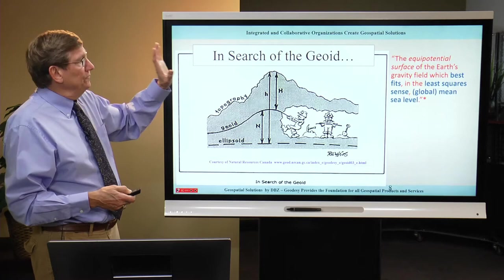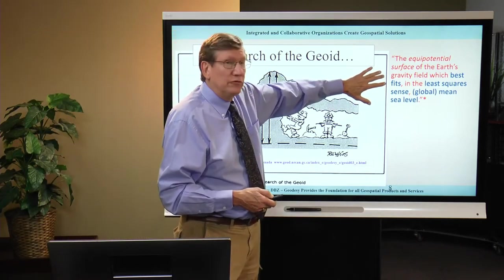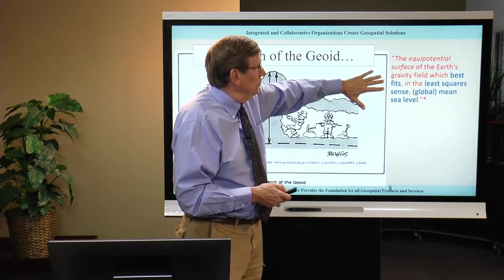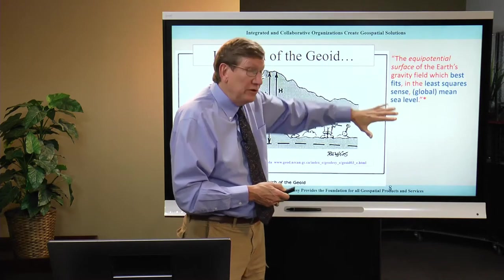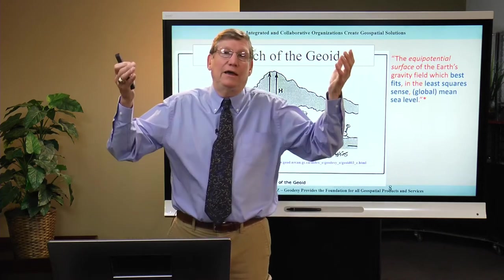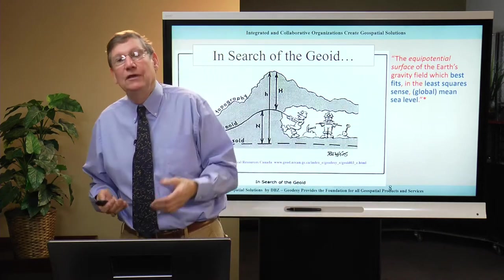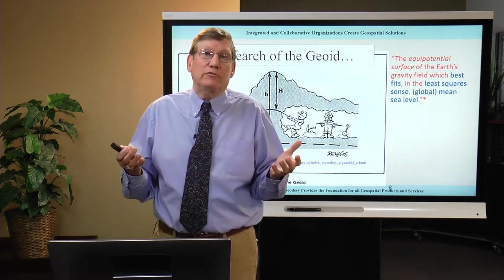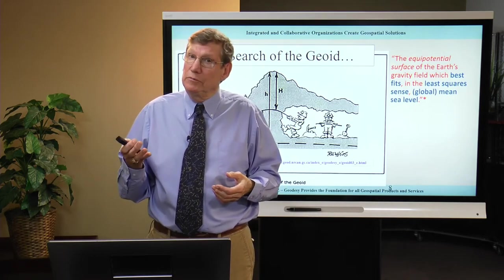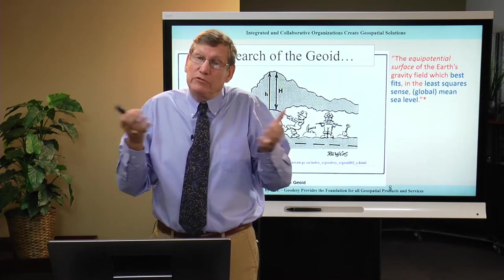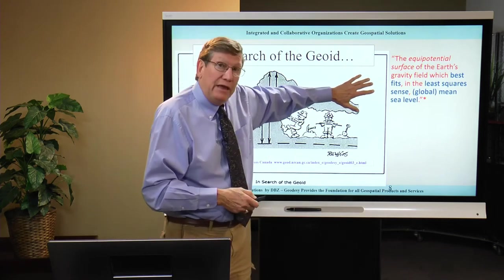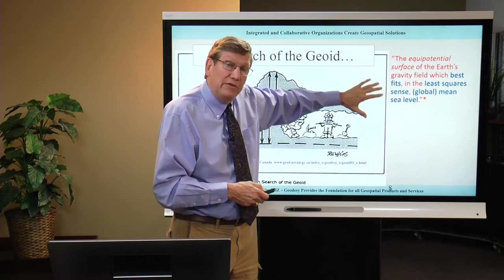What is the real definition of the geoid? It's the equipotential surface of the gravity field which best fits, in the least squares sense, global mean sea level. How do you get global mean sea level? The oceans have tides, waves, winds, and hurricanes, so they have models for it. Local tide gauge measurements give local mean sea level, not global mean sea level. It's all modeled — a mathematical function — but scientists believe they have a very good and accurate estimate of that value.